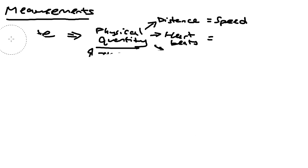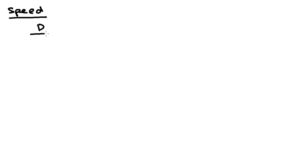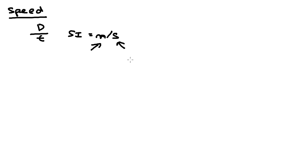Now we will look specifically into speed. Speed is actually the rate of change of distance with respect to time, and the SI unit of speed is meters per second. If you look carefully, this SI unit is made up of the SI unit of distance, which is meters, and the SI unit of time, which is seconds.